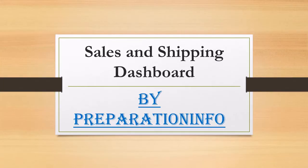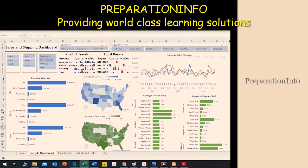Here is the sample video of a sales and shipping dashboard. This dashboard contains data for a company with sales data for three years: 2016, 2017, and 2018. There are three sales managers — Anna, Henry, and Yosef. They sell products across four categories: accessories, baby products, clothing, and toys. They sell all across the US.